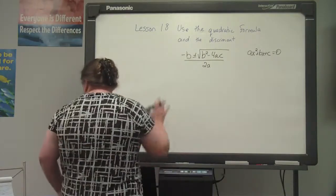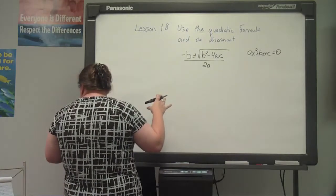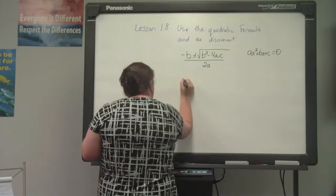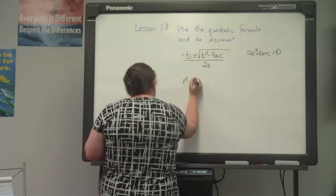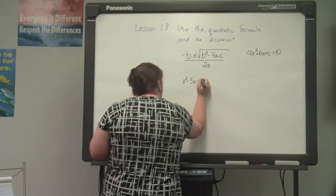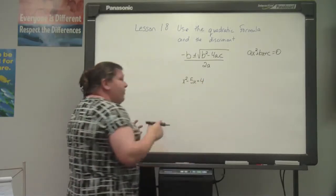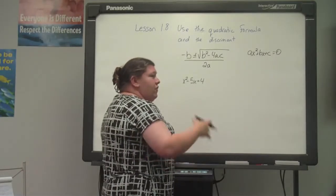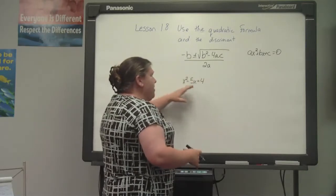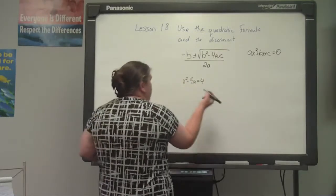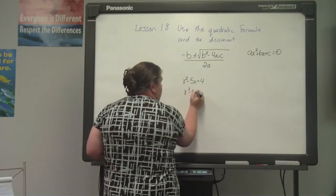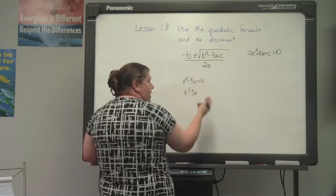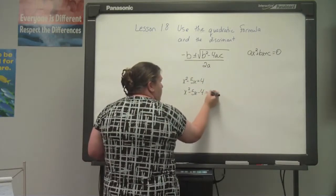I'm going to give you an equation that's going to have two real solutions. The equation is x squared minus 5x equals 4. The first thing you have to do is put your equation into standard form. This has to be rewritten as x squared minus 5x, and when we move the positive 4 to the other side of the equal sign, it becomes negative 4, giving us x squared minus 5x minus 4 equals 0.